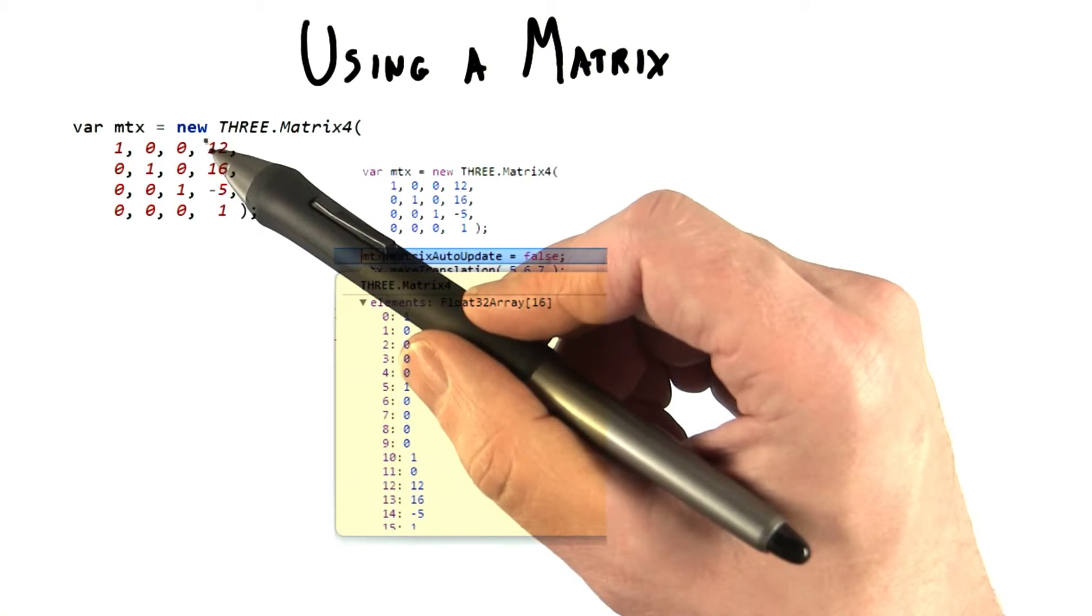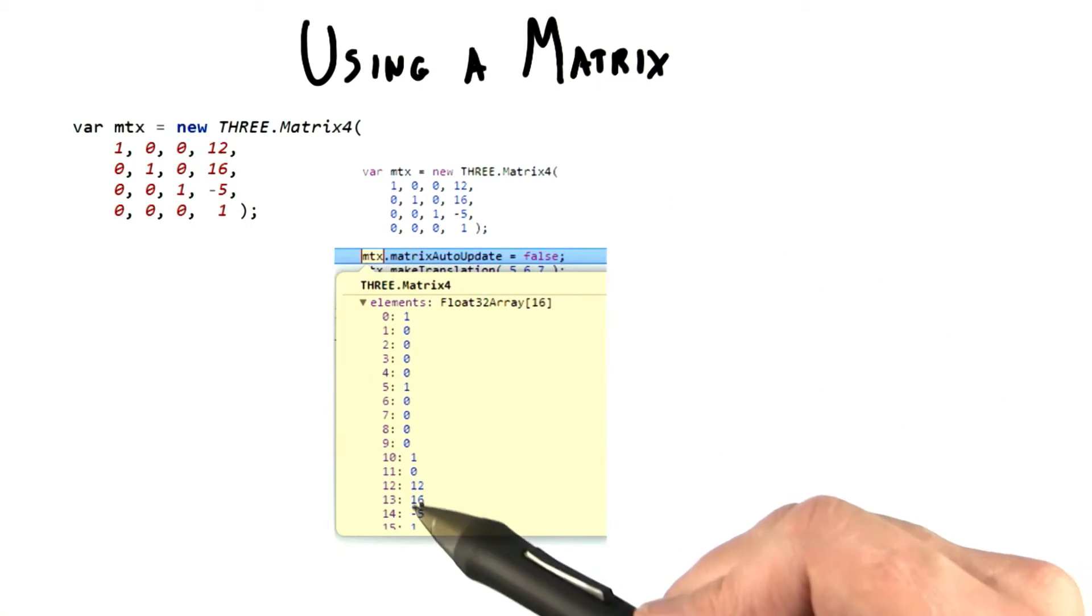That's because, as we've pointed out before, the translation values go at the very end of the matrix, as shown here.